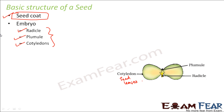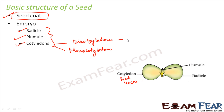The seed coat protects the embryo, which is going to grow to form the new plant. The number of cotyledons can vary — some seeds contain one cotyledon and some contain two. Based on the number of cotyledons, seeds can be classified into two types: dicotyledons, which have two cotyledons, and monocotyledons, which have one. Plants with two cotyledons are called dicots and those with one are called monocots.